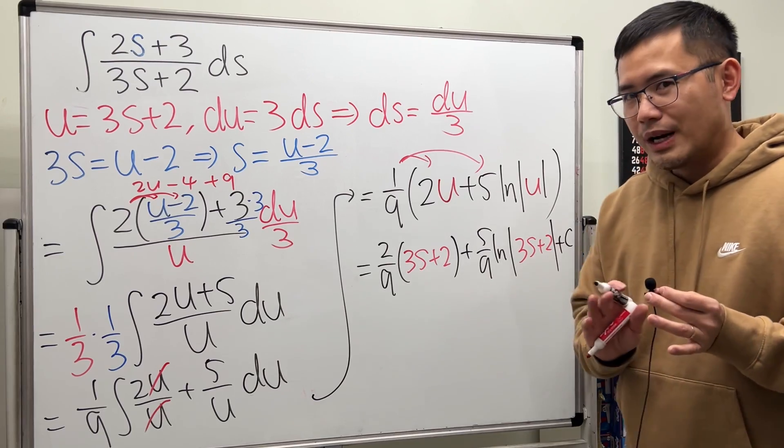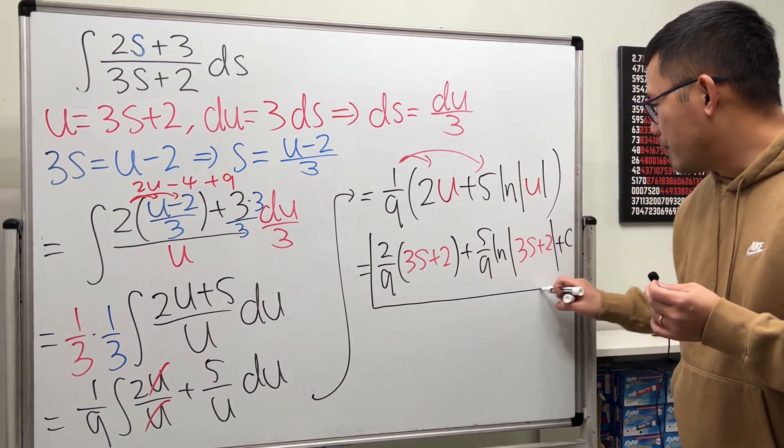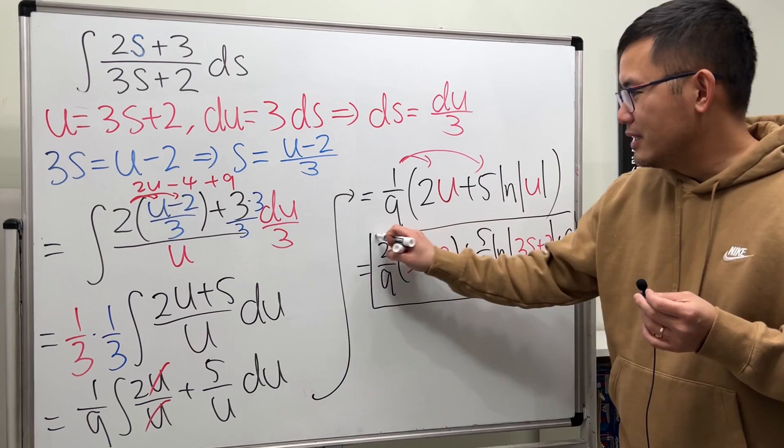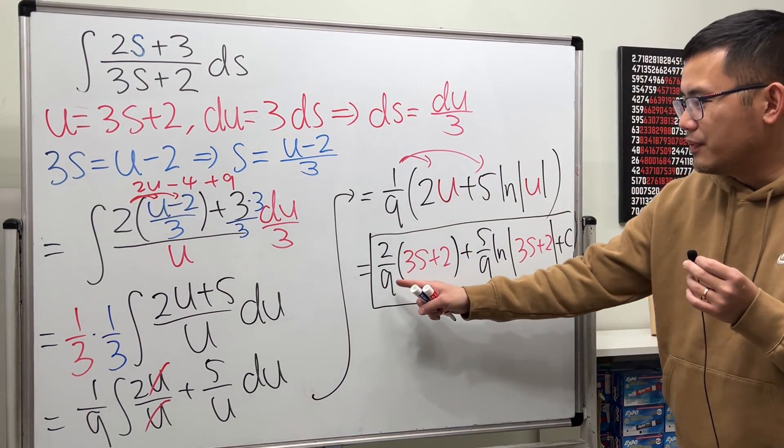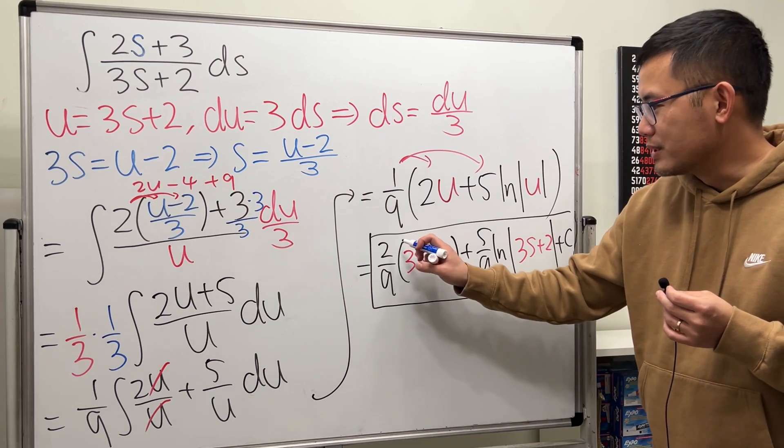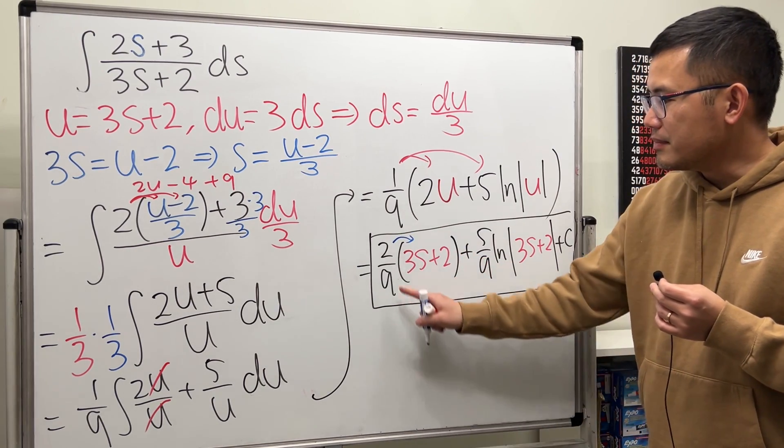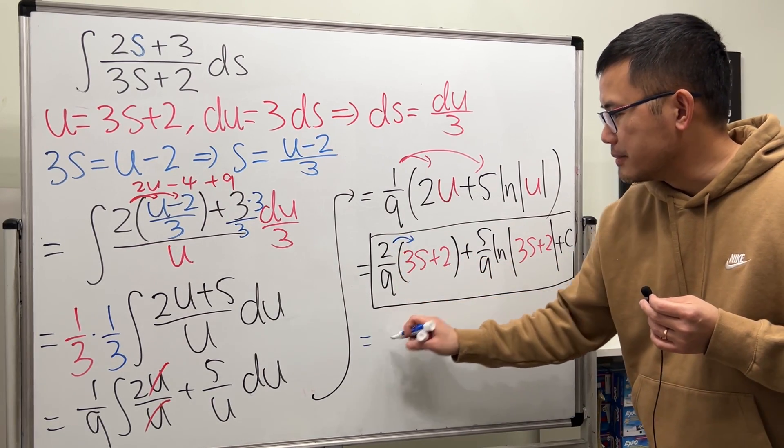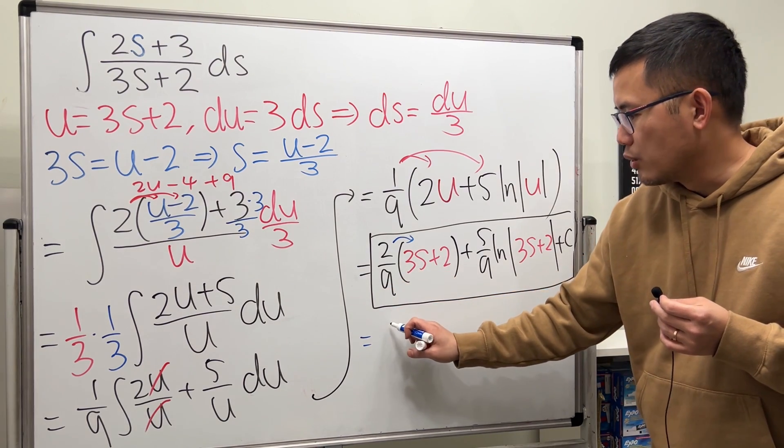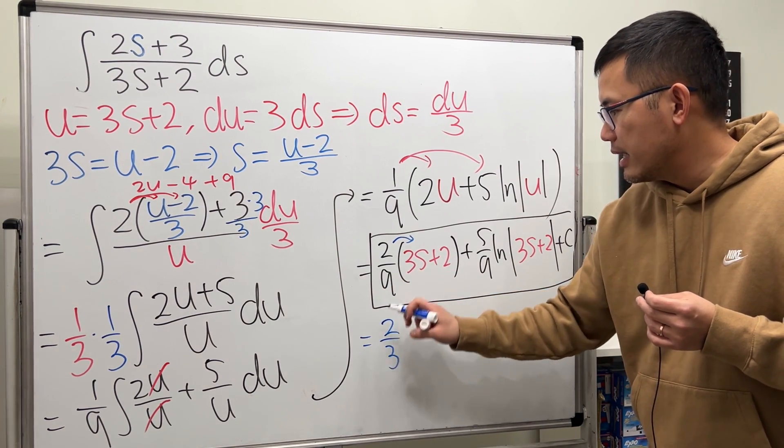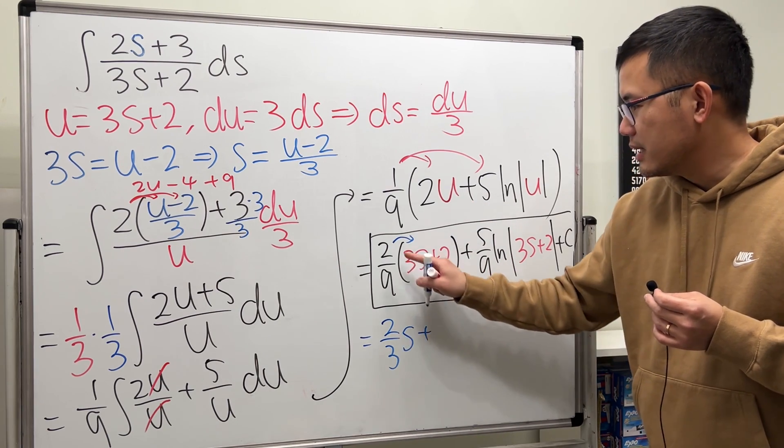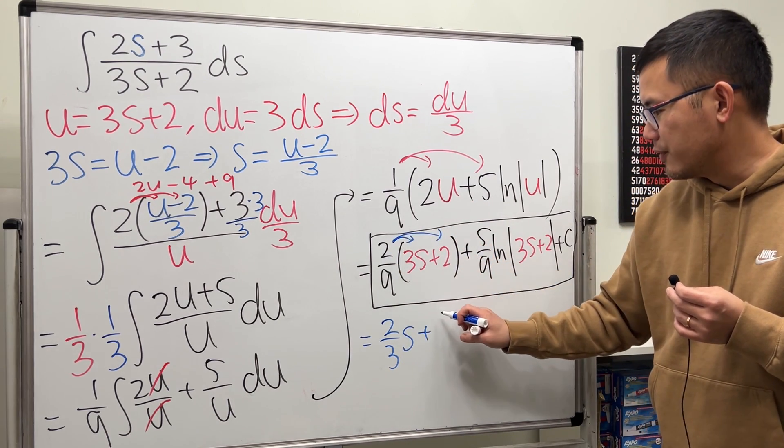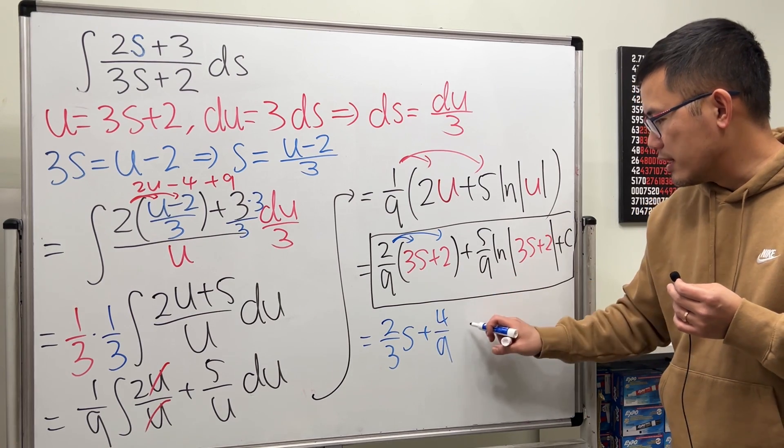Or, well, I would like to address this issue. Right here, if you box this answer, it should be totally okay. But notice that if you do distribute this a little bit, you will see that this times that. 2 over 9 times 3. We get that and that cancel. So it's 2 over 3. And then we have s. Plus 2 over 9 times that is 4 over 9. And then the rest is the same, right?